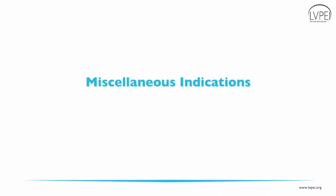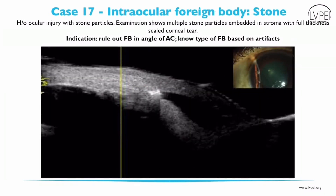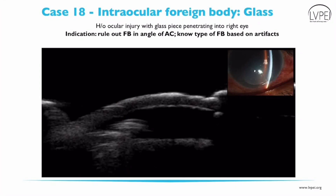Regarding miscellaneous indications, assessing the vault in an implantable collamer lens postoperatively is very important, and UBM helps in assessing the same. It also helps in assessing the postoperative centration of the ICL. UBM tells us the location and type of foreign body based on the artifact seen. This case presented with a history of ocular injury with stone particles; UBM identified the stone intraocular foreign body showing a shadowing artifact in the angle of the anterior chamber. Another case with ocular injury from glass pieces showed that UBM confirmed the presence of a glass foreign body as it shows a comet tail artifact.